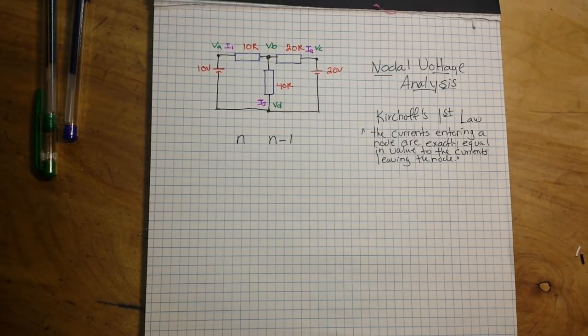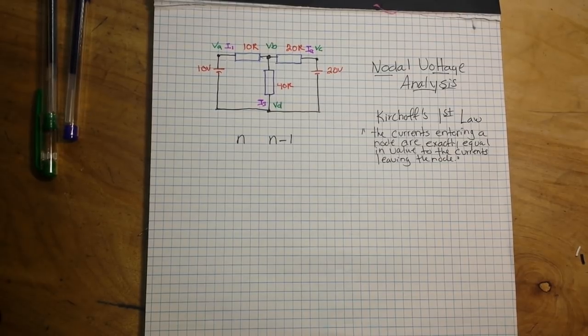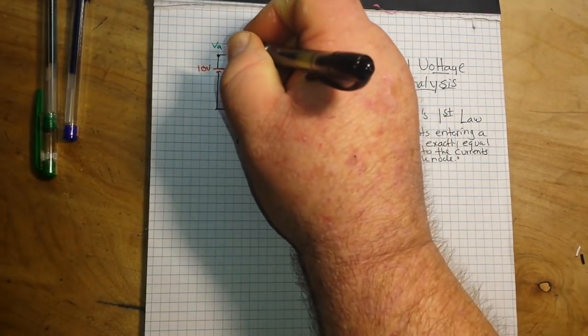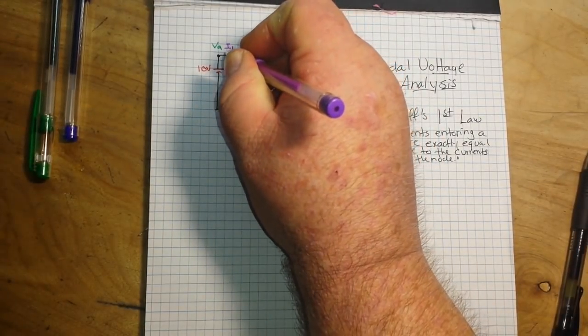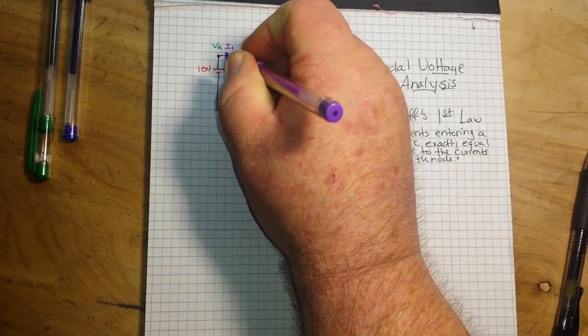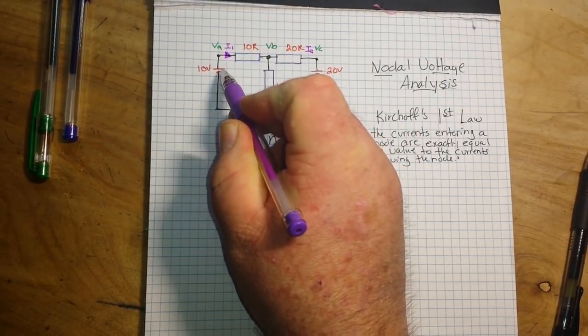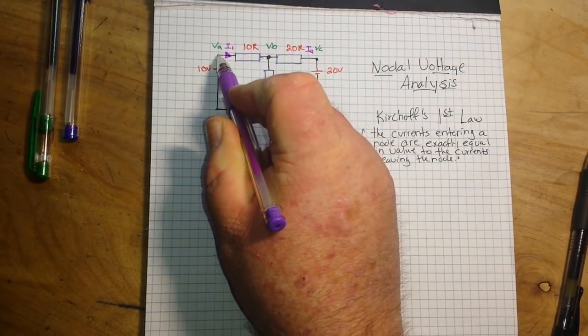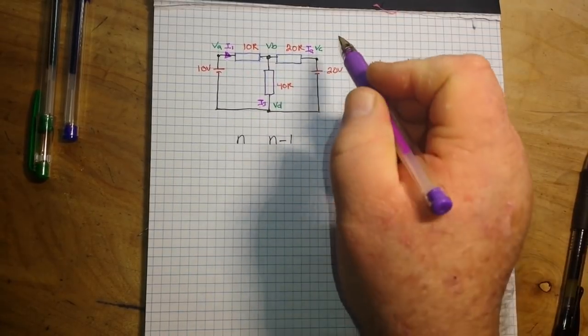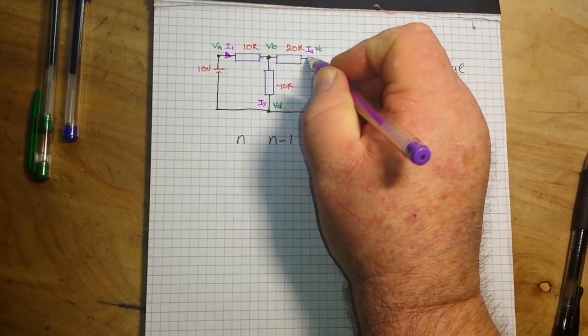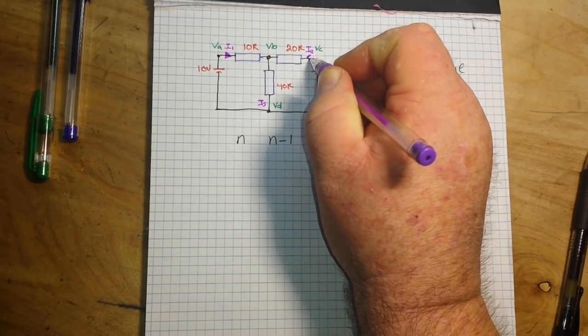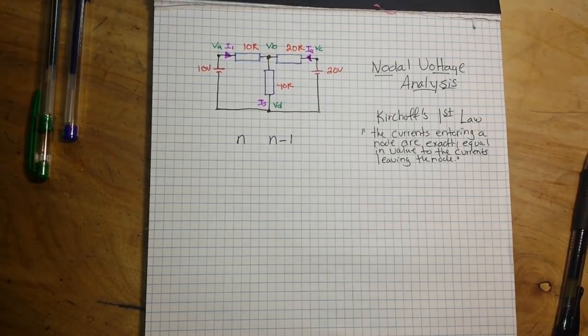So our first step in the nodal analysis is to determine the directions of our current. Since I drew the current in purple, I will color it in purple. So here is our 10 volt power source. This is the positive, so we know the current is coming here. Then over here we have our 20 volt power source. And the current is also flowing in that direction.